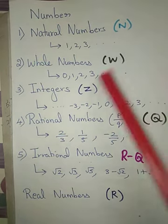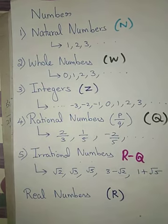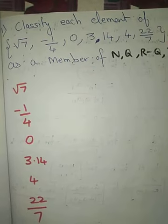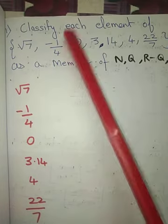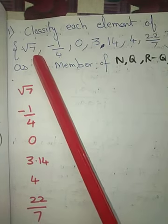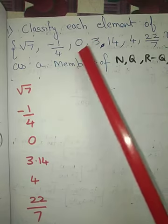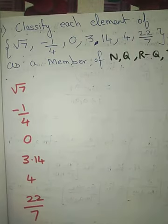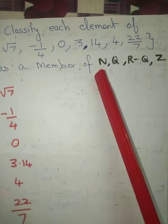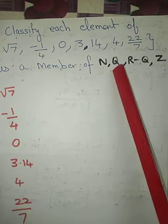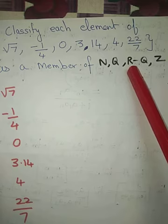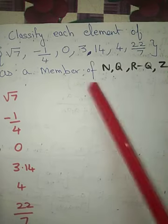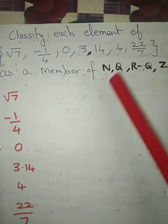Make sure you have all these notation letters memorized. Now we are going to look at Exercise 2.1, first question. The question asks you to classify each of the following elements — root 7, minus 1 by 4, 0, 3.14, 4, and 22 by 7 — and tell what type of number each one is: natural, rational, irrational, or integer.